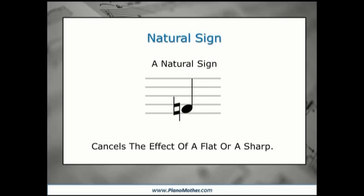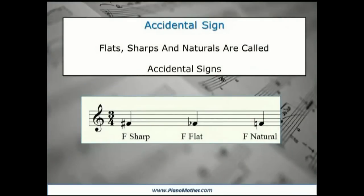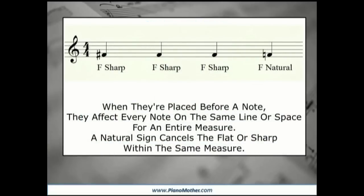A natural sign cancels the effect of a flat or a sharp. Flats, sharps, and naturals are called accidental signs. When they're placed before a note, they affect every note on the same line or space for an entire measure. A natural sign cancels the flat or sharp within the same measure.